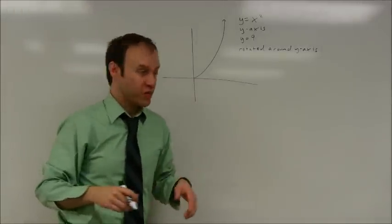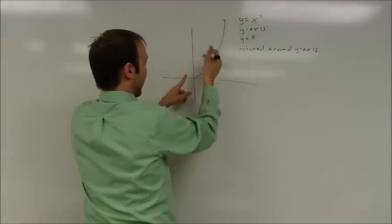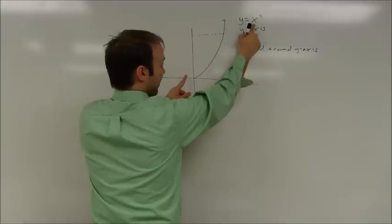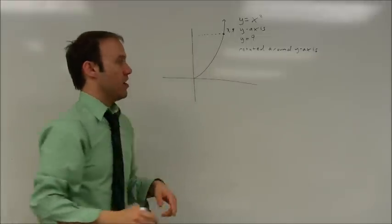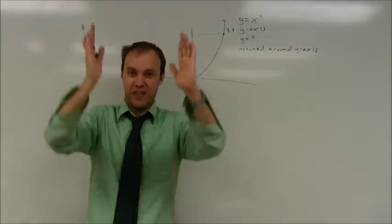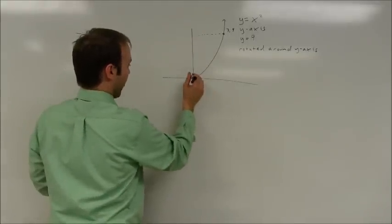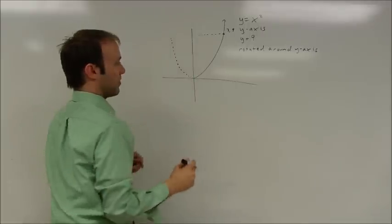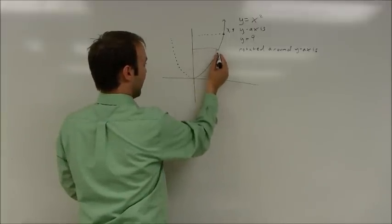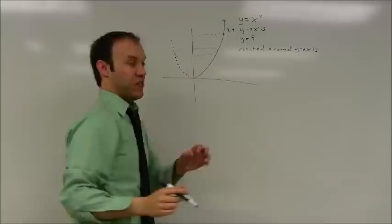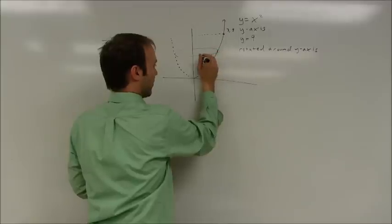This time I'm looking at the region bounded by y equals x squared, the y-axis, and y equals nine. If y is nine, x is going to be three. I'm rotating this region around the y-axis, creating this kind of wine glass or tulip shape. You may want to draw in the other part of your graph. This is going to be solid on the inside, so the disk method works great here.